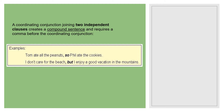When you join two independent clauses to create a compound sentence, it requires a comma before the coordinating conjunction. For example: 'Tom ate all the peanuts, so Phil ate the cookies' or 'I don't care for the beach, but I enjoy a good vacation in the mountains.' You use a comma before the conjunction when you are joining two independent clauses.